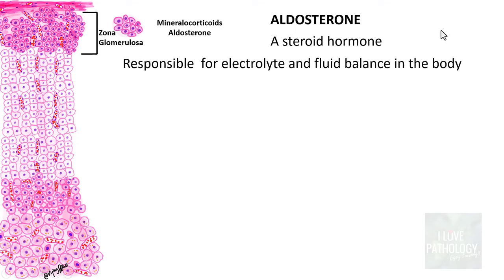Renin acts on angiotensinogen — produced by the liver — to form angiotensin 1. Angiotensin 1 travels through systemic circulation and is converted to angiotensin 2 by angiotensin-converting enzyme, particularly in the lung. Angiotensin 2 has two actions: it causes direct vasoconstriction and stimulates adrenal zona glomerulosa cells to produce aldosterone. That's how aldosterone is synthesized in response to low blood pressure through the RAAS.